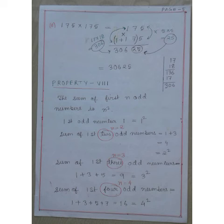Sum of first 4 odd numbers is 1+3+5+7, which equals 16. 16 is 4².